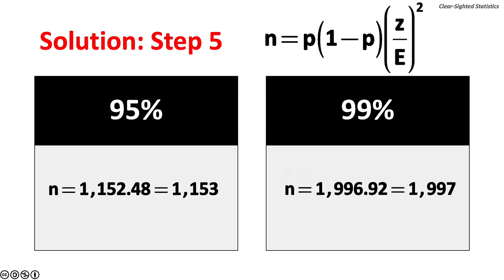Step 5. Round up your answers if necessary. At a 95% confidence level, a sample size of 1,153 is needed. A sample of 1,997 is needed for a 99% confidence level.